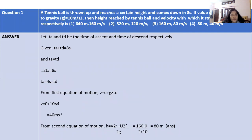Let's move to the first question. A tennis ball is thrown up and reaches a certain height and comes down in 8 seconds. If value of acceleration due to gravity is 10 m/s², then height reached by tennis ball and velocity with which it strikes the ground respectively is. There are four options. Just go for the solution.